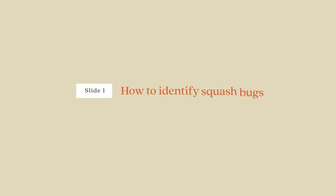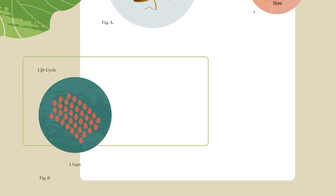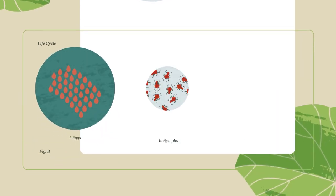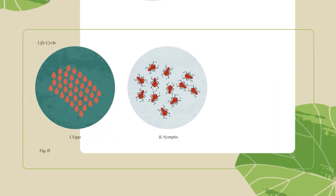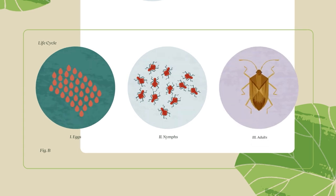How to identify squash bugs. Squash bugs start life in a cluster of bronze eggs, but soon hatch as green and dark red nymphs that turn light grey and brown as they age.